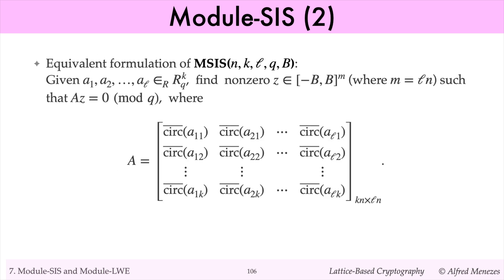The matrix form of ring SIS is the following. Let A be the KN by LM matrix, obtained by concatenating the anti-circulant matrices corresponding to the polynomials in the polynomial vectors a1, a2 up to al. Then, the module SIS problem is to find a small vector z in the null space of A modulo q. Also, z should be nonzero. So module SIS is a special case of SIS where the matrix A is structured, namely comprised of blocks of anti-circulant matrices.